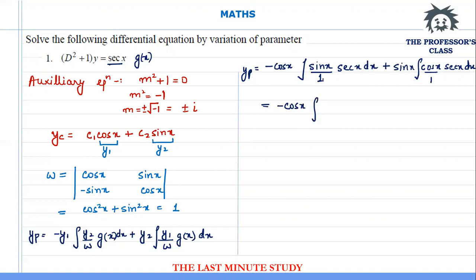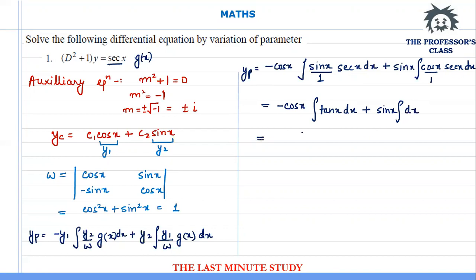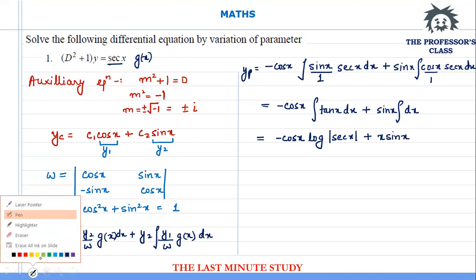cos(x) times the integration: sec(x) becomes 1/cos, and sin/cos is tan(x), so I get tan(x) dx. Plus sin(x): sec becomes 1/cos, and cos/cos cancels out, leaving just dx. Integrating: cos(x)·log|sec(x)| plus x·sin(x).